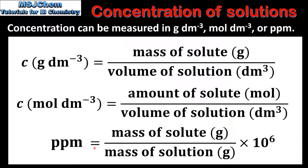And to calculate the concentration of a solution in ppm, which is parts per million, divide the mass of solute in grams by the mass of solution in grams and multiply by 10 to the power of 6.